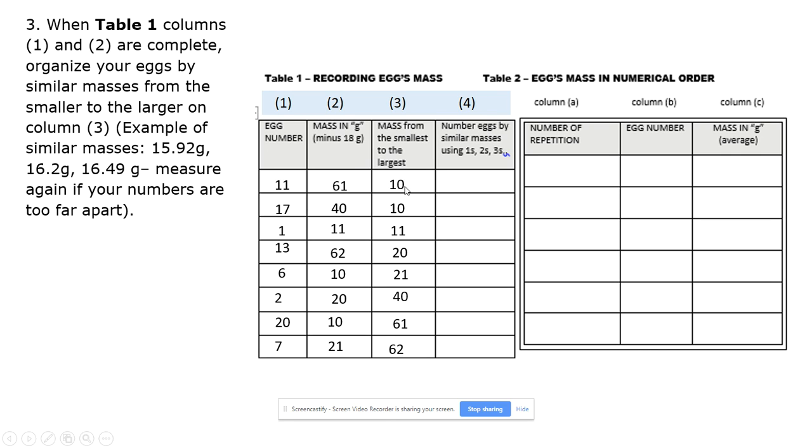Then, you are going to record the number of repetitions by grouping them off. This group will have 3, 2, 1, and 2. Then, you are going to number the eggs by similar masses using 1's, 2's, 3's, and 4. So, this group would be group 1, this group is group 2, 3, and 4.